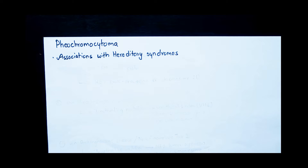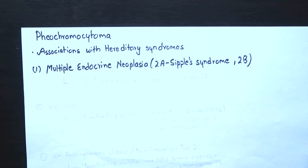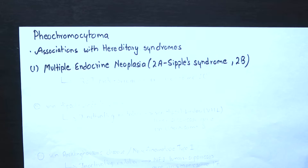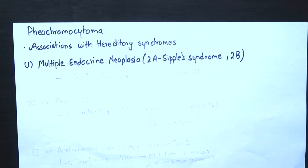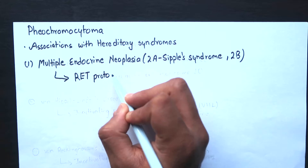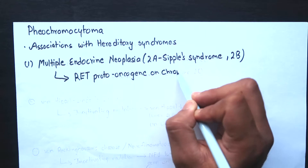Pheochromocytoma occurs in association with the following hereditary syndromes. First, we have Multiple Endocrine Neoplasia 2A, also known as Sipple syndrome, or Multiple Endocrine Neoplasia 2B. This is an autosomal dominant disorder associated with an activating germline mutation of the RET proto-oncogene on chromosome 10.